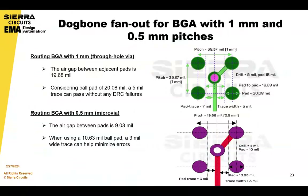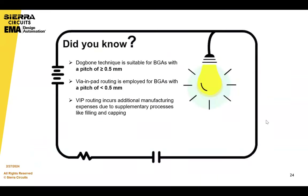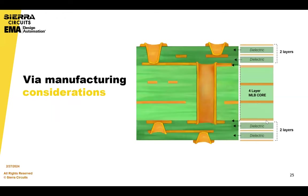For a 1 millimeter BGA pitch, the air gap between adjacent pads is 19.68 mils. Considering a ball pad of 20.08 mils, a 5 mil trace can pass without any DC issues. The air gap between pads of a 0.5 millimeter pitch BGA is 9.03 mils. When working with a 10.63 mil ball pad, a 3 mil wide signal can pass with optimum trace clearance. As a rule of thumb, use dog bone for a pitch greater than 0.5 millimeter; when it gets to 0.5 millimeter, switch to VN pad routing.